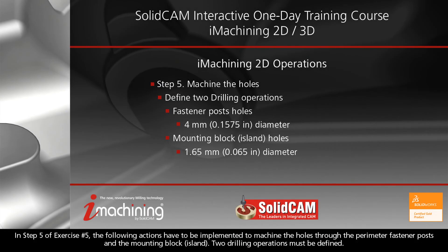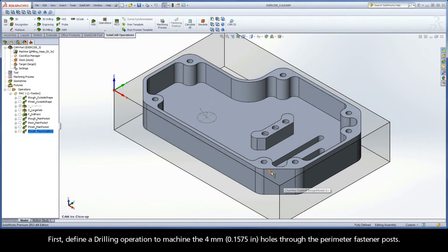In step 5 of exercise number 5, the following actions have to be implemented to machine the holes through the perimeter fastener posts and the mounting block. Two drilling operations must be defined. First, define a drilling operation to machine the 4mm holes through the perimeter fastener posts.